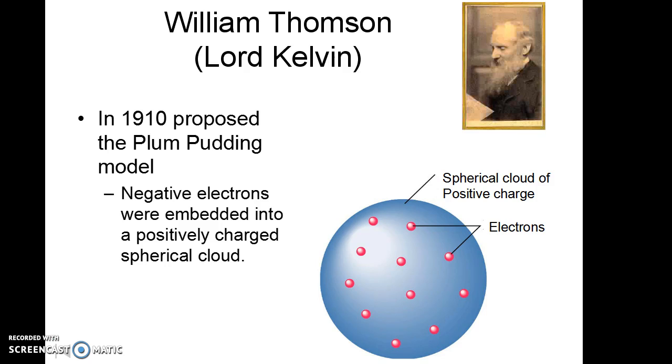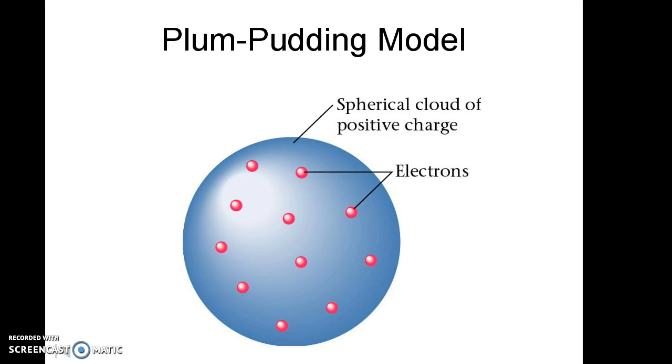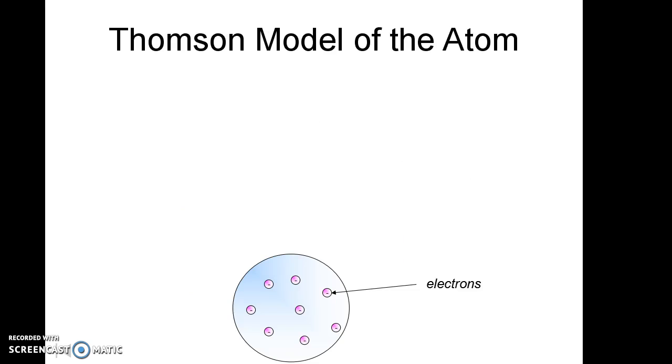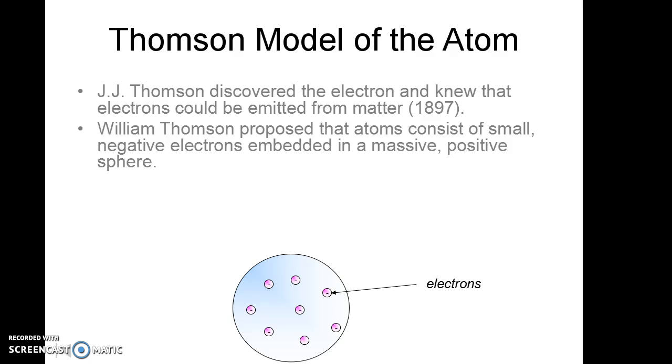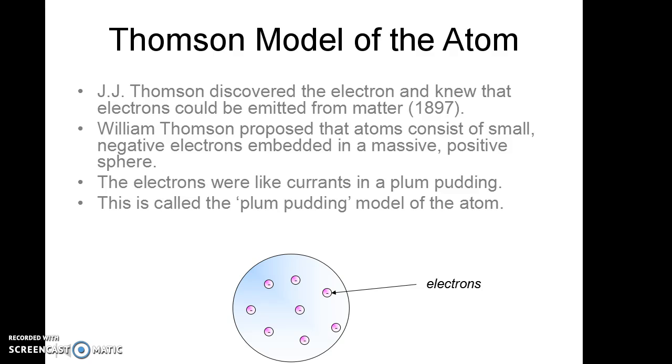So, we started with Dalton's model, which you need to have in your notes, and now we have Thompson discovered the electron. That's another thing. And now we've got the Thompson, the other Thompson, Kelvin, gives us the plum pudding model, or sometimes we call it the blueberry muffin model of the atom. And this was a summary of what that looked like.